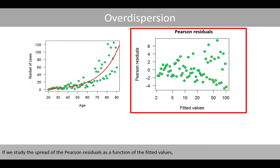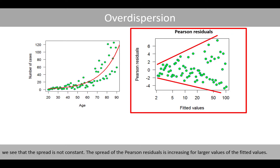If we study the spread of the Pearson residuals as a function of the fitted values, we see that the spread is not constant — the spread of the Pearson residuals is increasing for larger values of the fitted values.